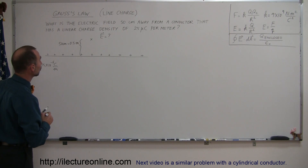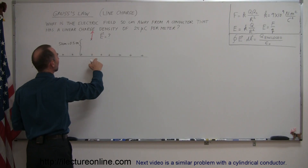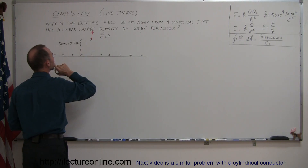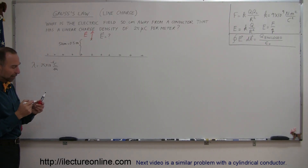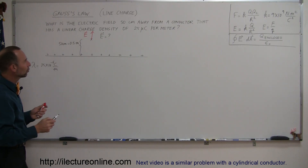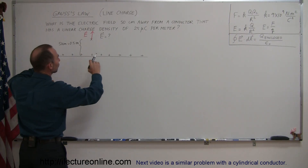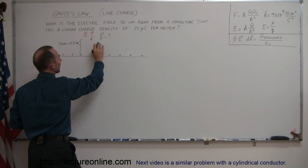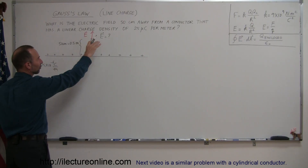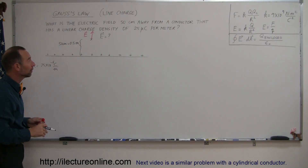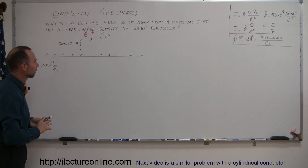We can assume this is a positive charge, so the field would be directed away from the conductor. We also need to assume that this conductor is almost infinitely long. Of course there's no such thing as an infinitely long conductor, but assume the conductor is so long that there is no effect beyond a certain distance, so we don't need to worry about the edge effects of the conductor. Otherwise the problem becomes a lot harder.